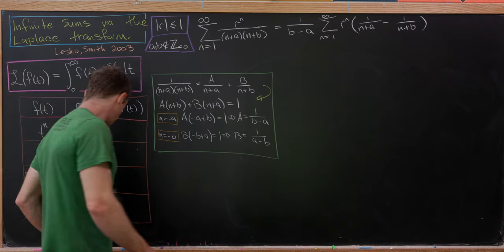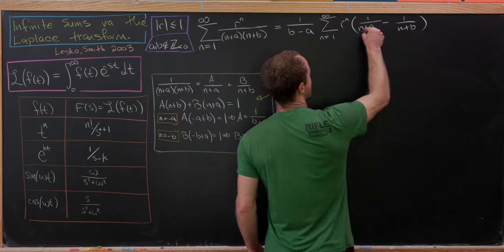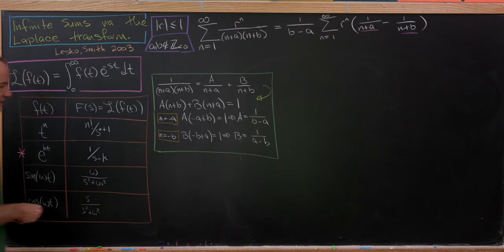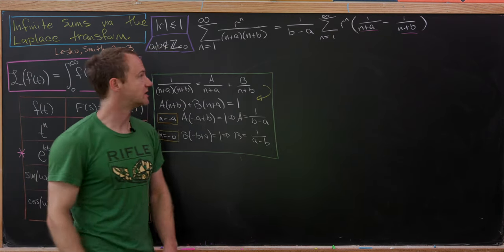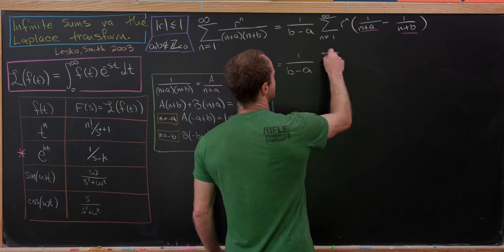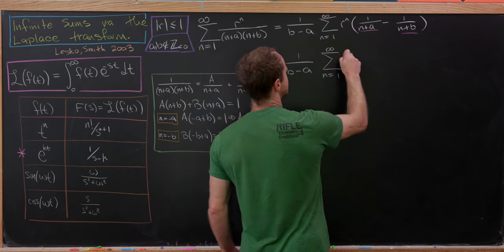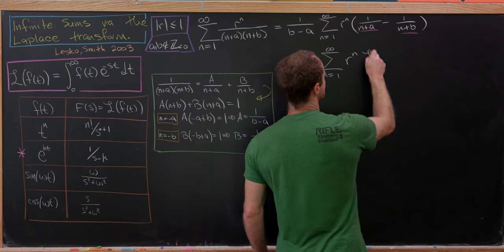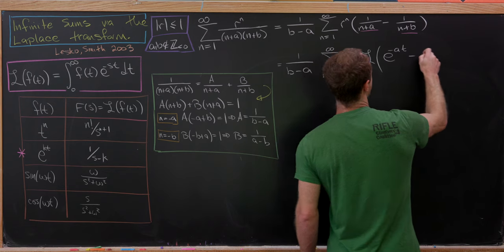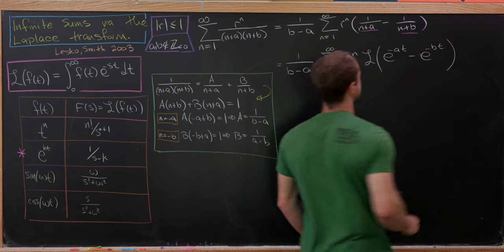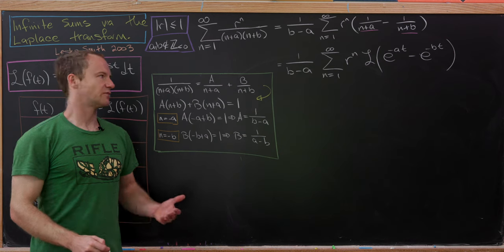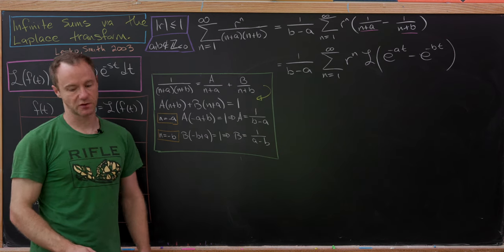This 1 over (n plus a) and 1 over (n plus b) looks a lot like the Laplace transform of the exponential function on our chart. So we can use that. We have 1 over (b minus a), and then the sum as n goes from 1 to infinity of r to the n times the Laplace transform of e to the minus at minus e to the minus bt. The Laplace transform is a linear operator, so those can be handled as separate transforms.